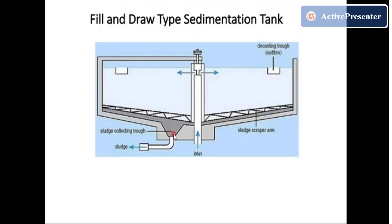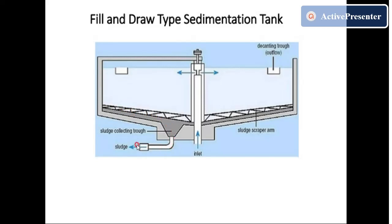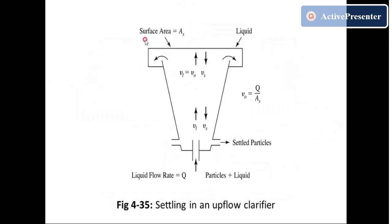There are two types of sedimentation tanks in plan: rectangular and circular. In the circular type, the inlet is made at the center; water comes in and moves outward in an upward direction from one point to the outer edge and exits. Particles with specific gravity greater than water settle toward the center as sludge, which is then removed. For exam purposes, you can draw this diagram.